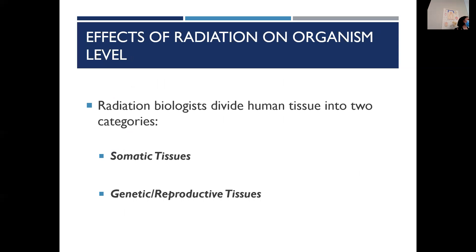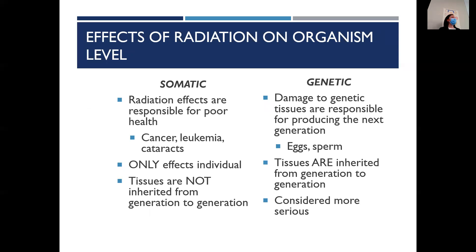Radiation biologists divide human tissue into two categories. There's a little bit more detail in your textbook, but don't worry about that extra detail — we're just going to deal with somatic and genetic. Those are the main tissue categories you'll be tested on. Somatic tissue is when a somatic effect occurs, meaning tissue in your body now is being affected by the radiation. Think of somebody getting a lot of radiation and ending up with leukemia, or their salivary glands being affected, giving them dry mouth — xerostomia. It's something causing an effect in that person because of the radiation they received.